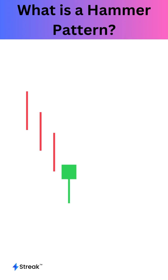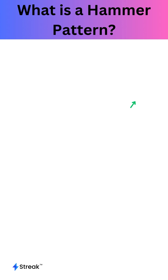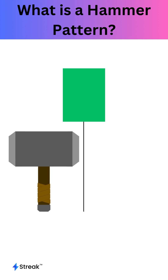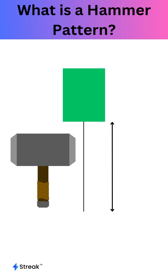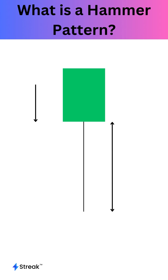The hammer pattern signals a possible bullish reversal in a downtrend. It looks like a hammer with a long lower shadow and a small body at the top. The lower shadow should be at least twice the length of the body, and the body can be of any color.